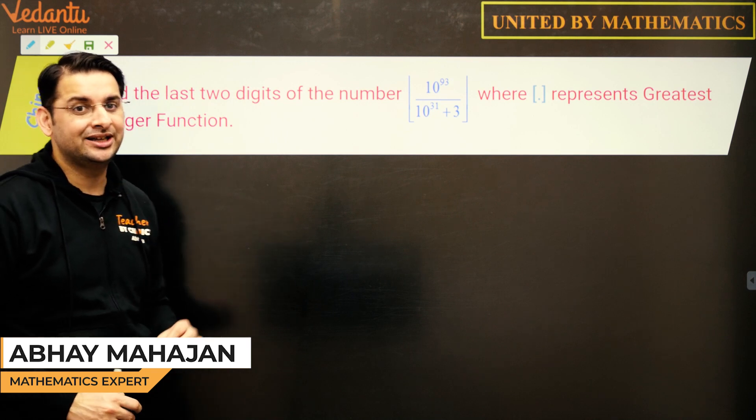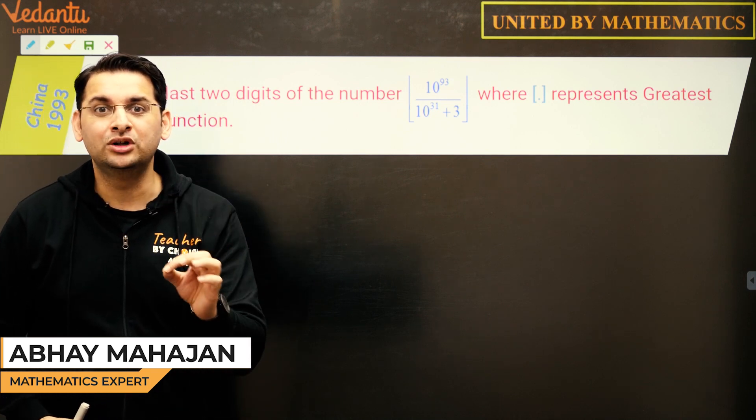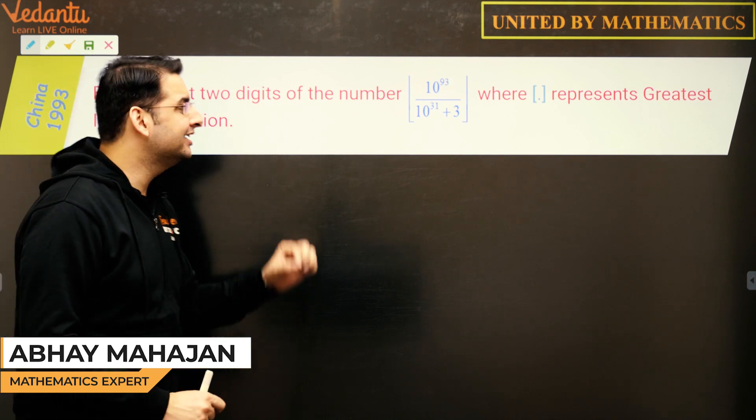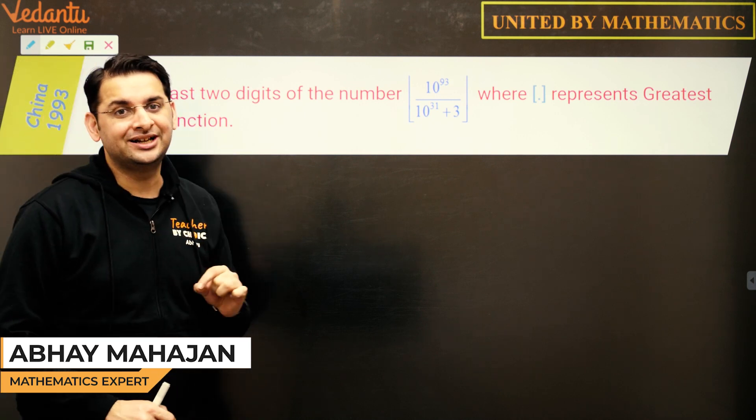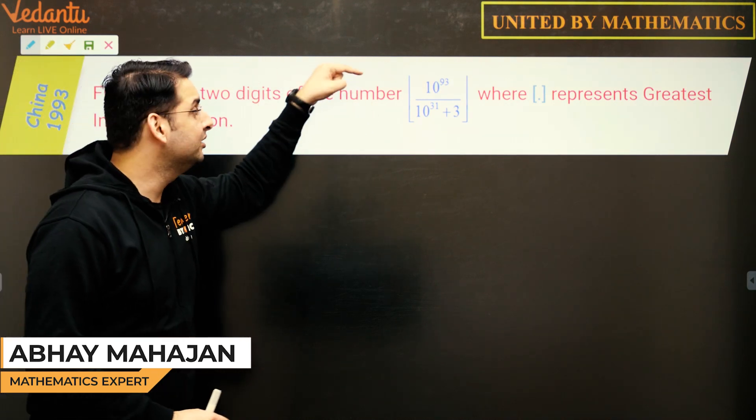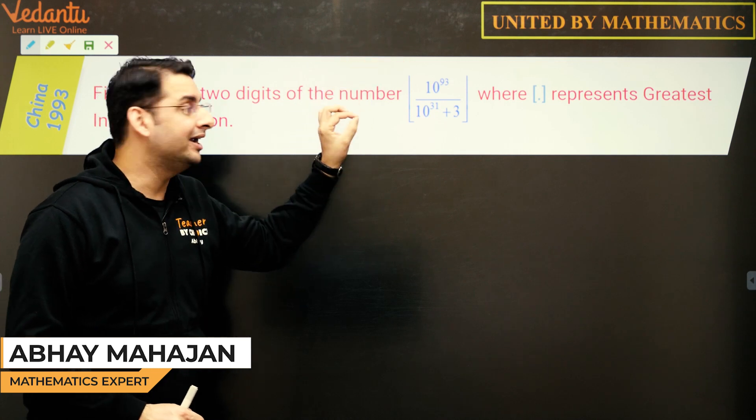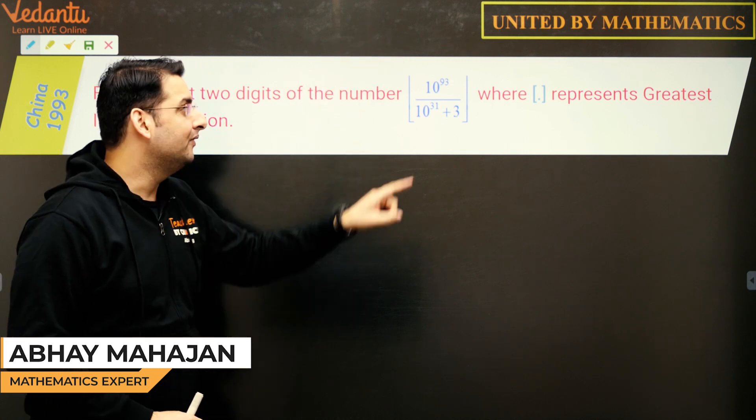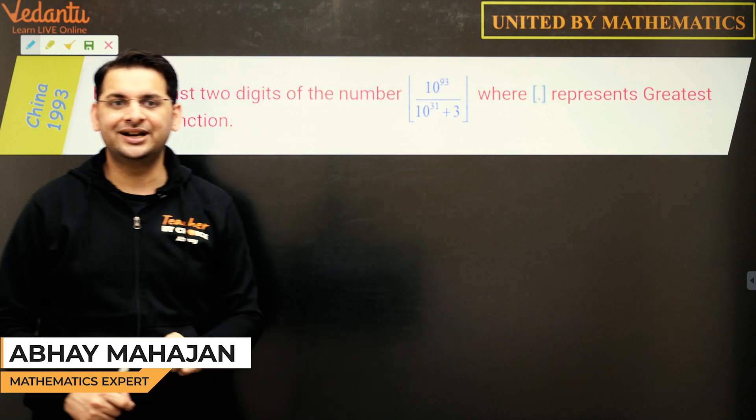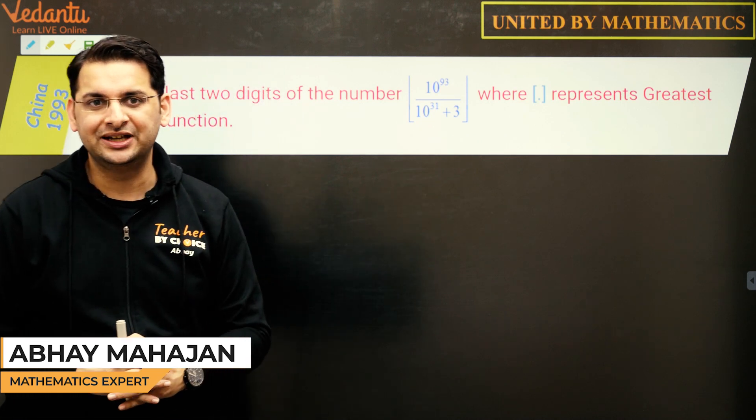This one is from China 93 and this is a problem which involves floor function. The question says find the last two digits of the number greatest integer of 10 to the power 93 upon 10 to the power 31 plus 3, where this represents greatest integer function or the floor function as we call it.